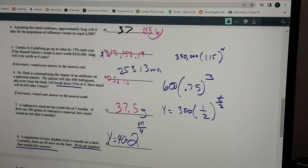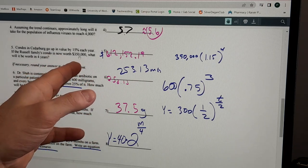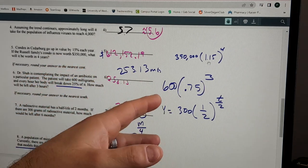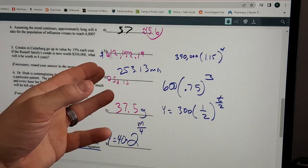You take the initial value of $350,000, it goes up 115% per year, and then you plug in the 4, and that's how you get this value there.